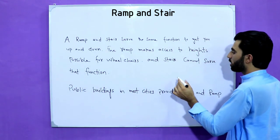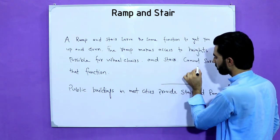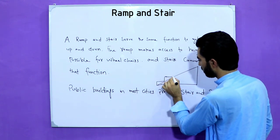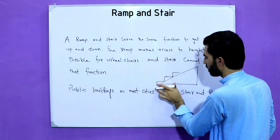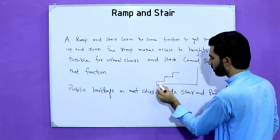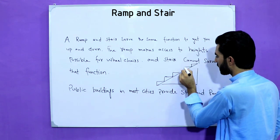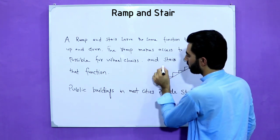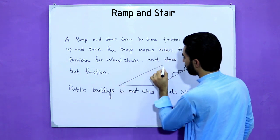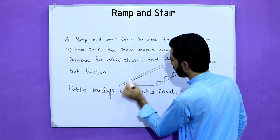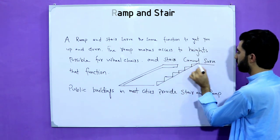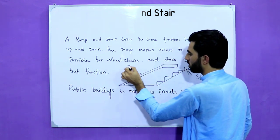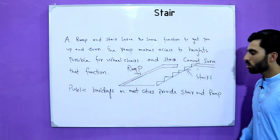I will also make a diagram so you can understand better. As you can see, this is a staircase — we provide steps here. But in a ramp we don't provide steps. So this is stairs and this is ramp.